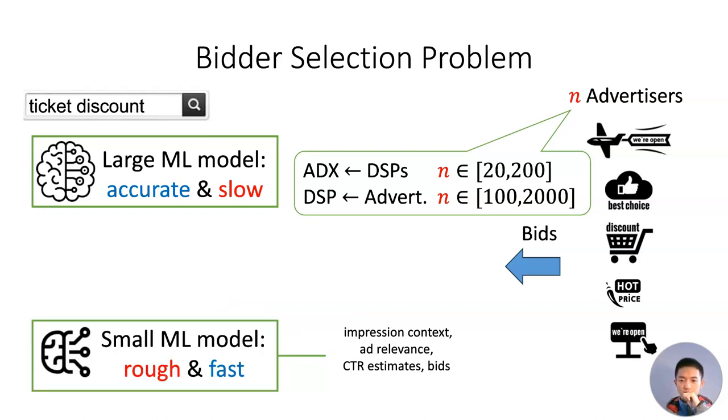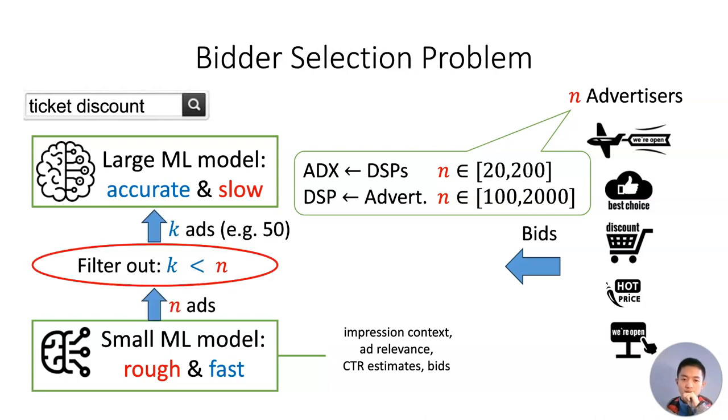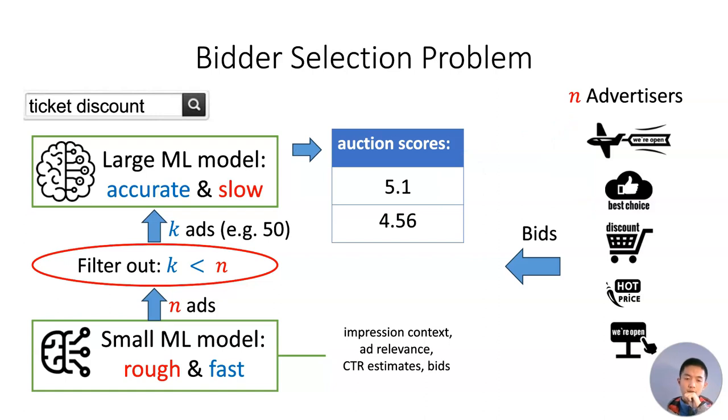In practice, companies handle this problem by a two-stage selection. It first filters out all but K advertisers by running a faster and less accurate model, and then it runs a proper auction in the remaining ones.